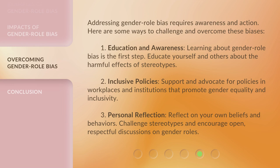Addressing gender role bias requires awareness and action. Here are some ways to challenge and overcome these biases. 1. Education and Awareness: learning about gender role bias is the first step — educate yourself and others about the harmful effects of stereotypes. 2. Inclusive Policies: support and advocate for policies in workplaces and institutions that promote gender equality and inclusivity. 3. Personal Reflection: reflect on your own beliefs and behaviors. 4. Challenge stereotypes and encourage open, respectful discussions on gender roles.